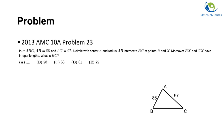Let's first draw the diagram. We have a triangle ABC. The length of AB is 86 and the length of AC is 97. A circle with center A and radius AB intersects BC at points B and X, so the radius of the circle is 86.